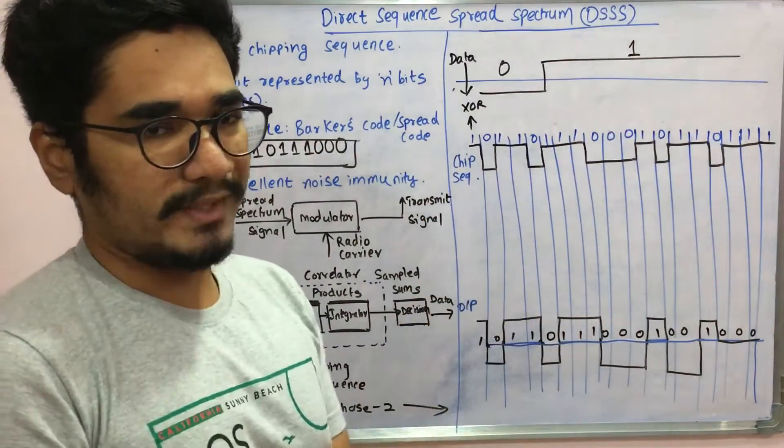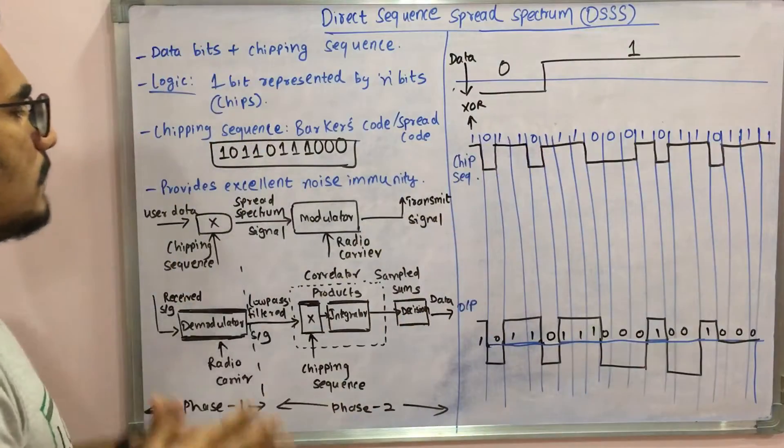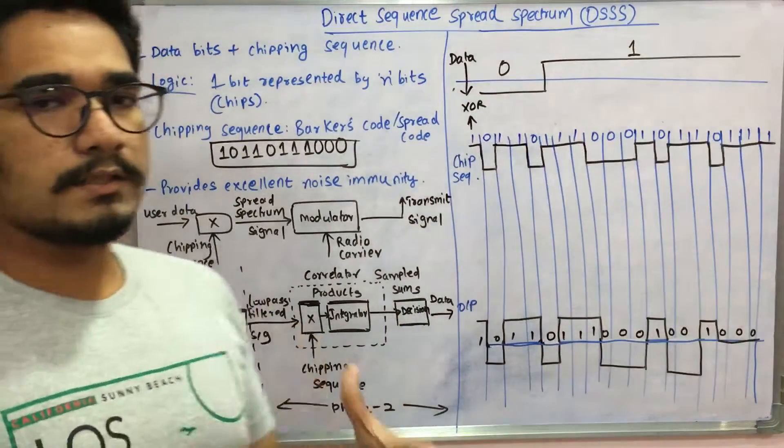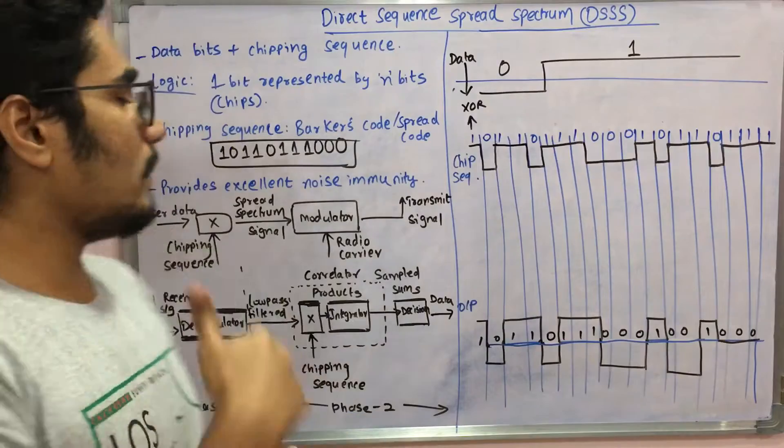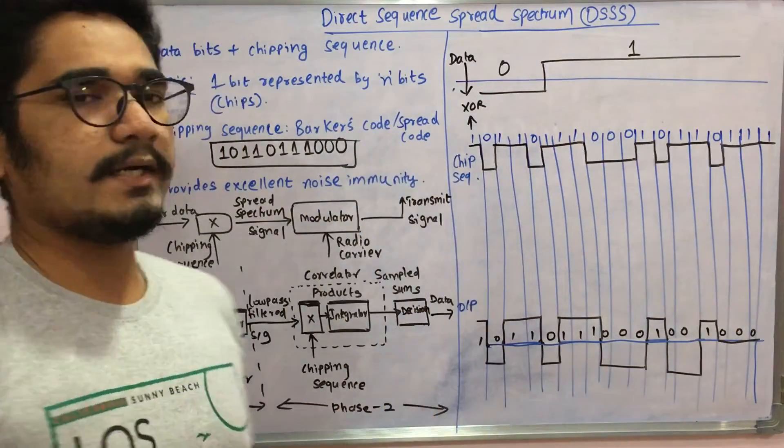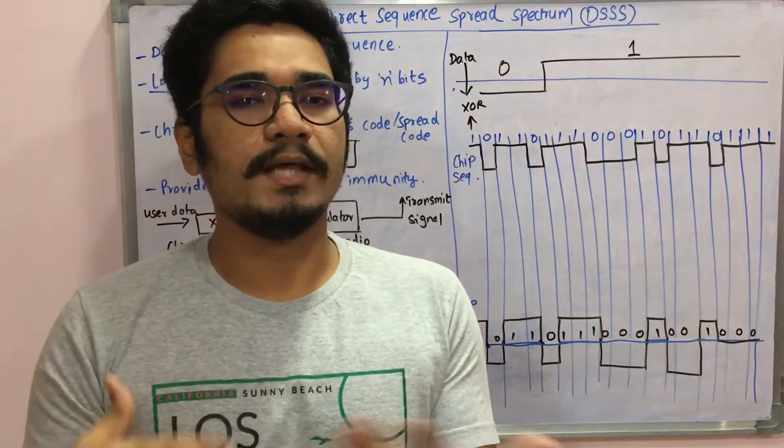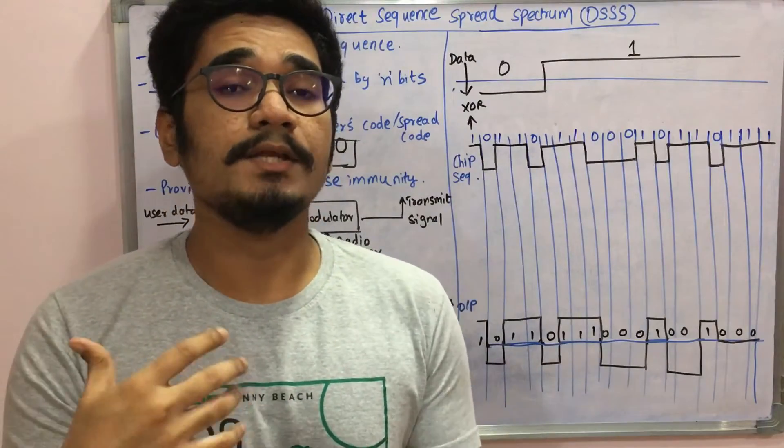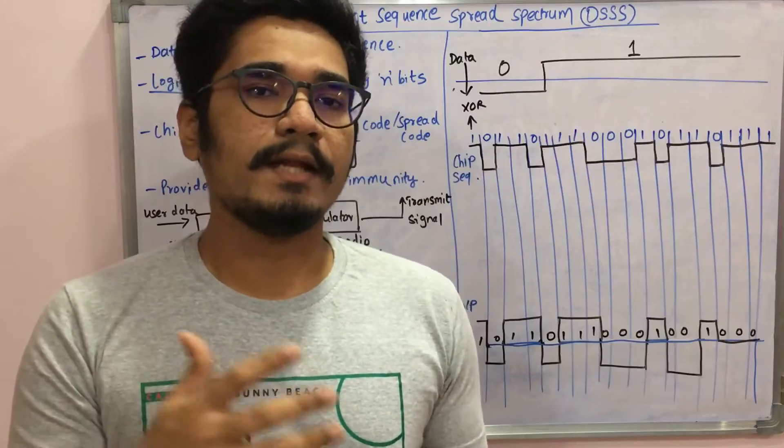Why use Barker code in DSSS? Because it provides excellent noise immunity. Like the original signal when it was there, it had lower bandwidth, then you apply the chipping sequence and you boost the bandwidth.